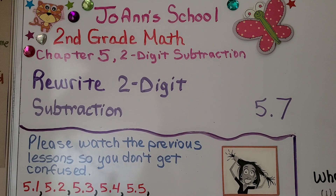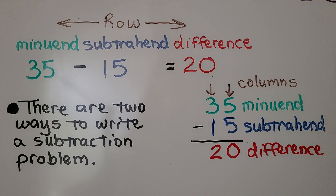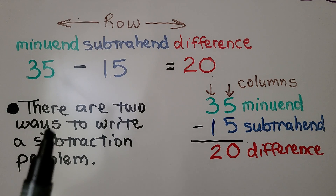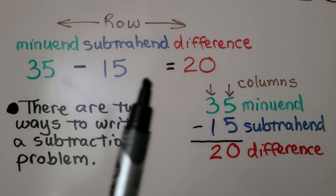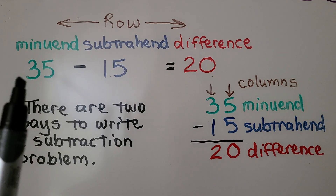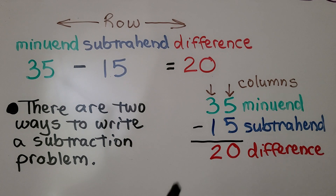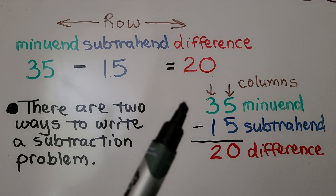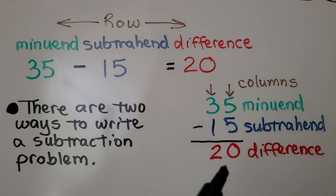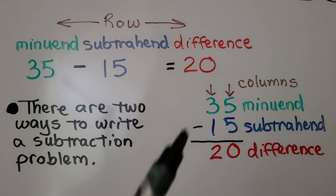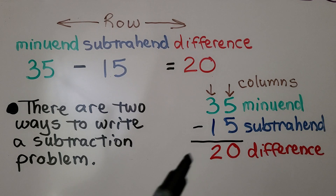Lesson 5.7: Rewrite Two-Digit Subtraction. There are two ways to write a subtraction problem. We can write it in a row, like a number sentence, and we can write it with place value columns — the ones and the tens.